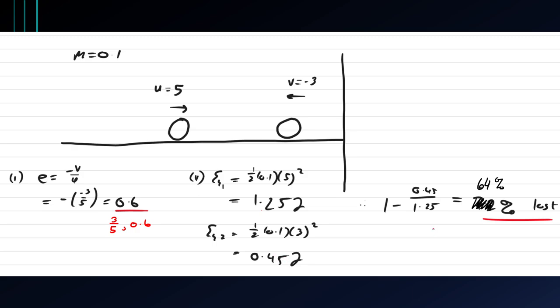Therefore the percentage loss in kinetic energy is 1 minus the difference between them, which is 64%. So because of the collision, it's lost 64% of its kinetic energy.